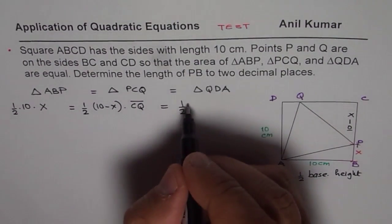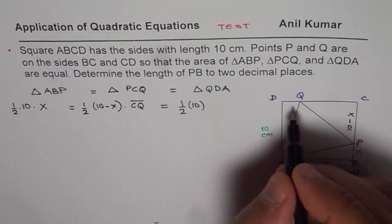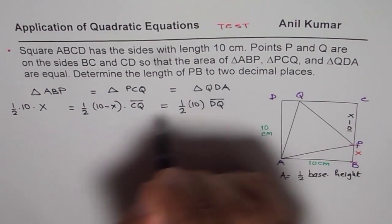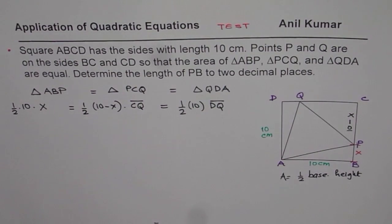Which is half of DA means half of 10, times DQ. So that is how you get the equation, which relates area of three triangles, all three triangle areas are equal.